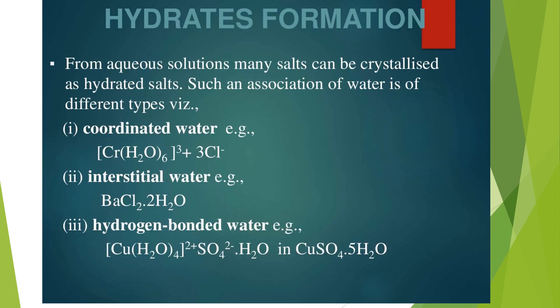Hydrates formation: From aqueous solution, many salts can be crystallized as hydrated salts. Such association of water is of different types. The first one is coordinated water, where water acts as a ligand with a central atom to form coordination complexes. Interstitial water is when water molecules are trapped in the structure at interstitial sites of the molecule. And hydrogen-bonded water. For example, in the molecule of hydrated copper sulfate, there are four water molecules acting as ligands (coordinated water), and one water molecule bonded with a hydrogen bond.